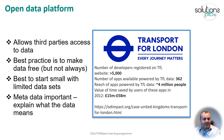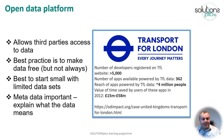Transport for London is probably the most famous use of open data. They made their data available, and they reckon they've saved about 15 to 58 million pounds from this, because the apps and other providers developed services that they didn't have to do themselves.